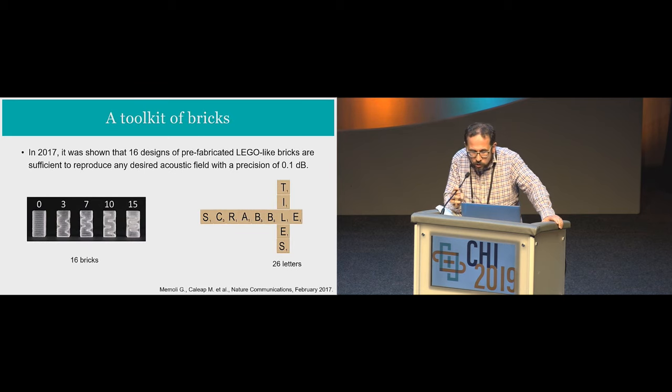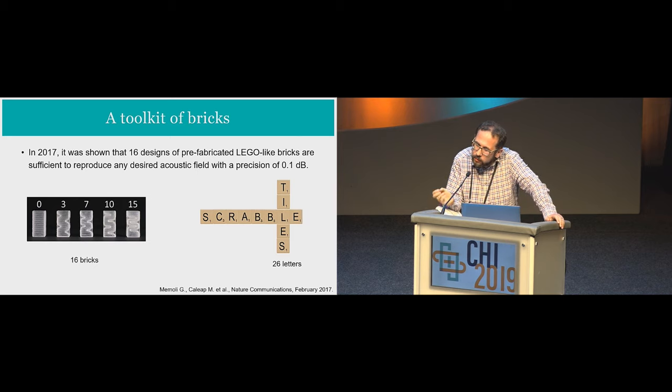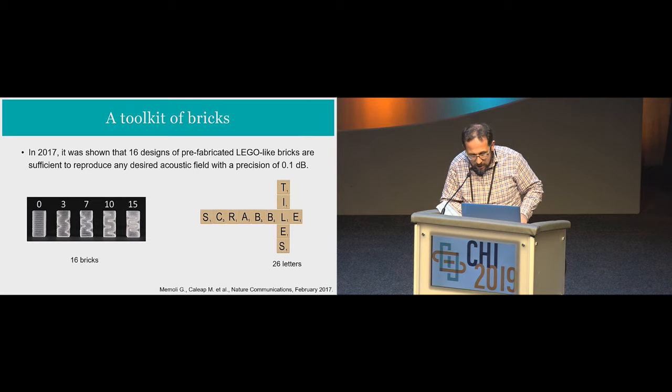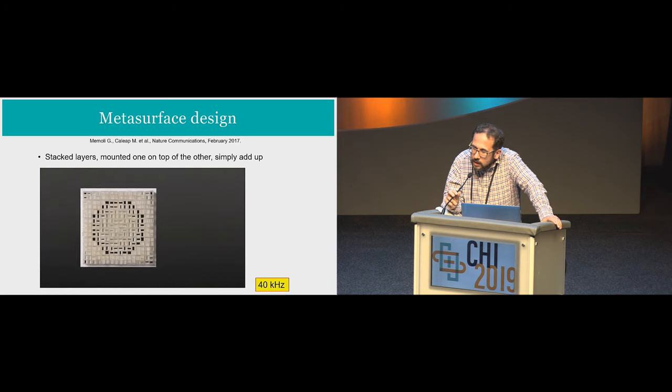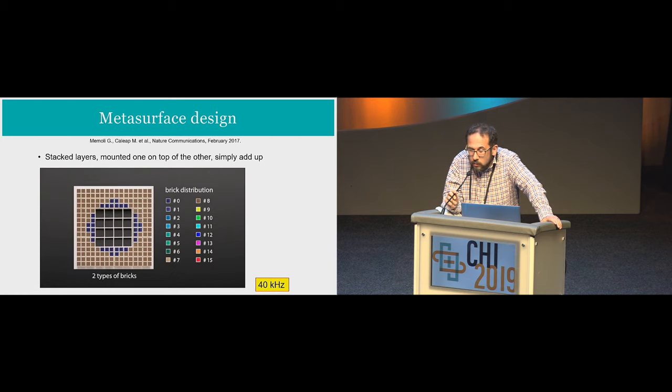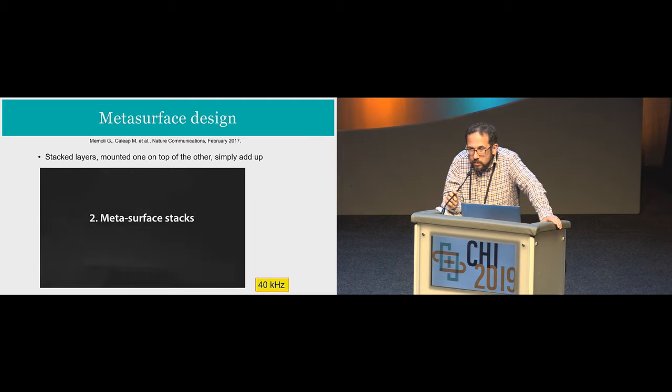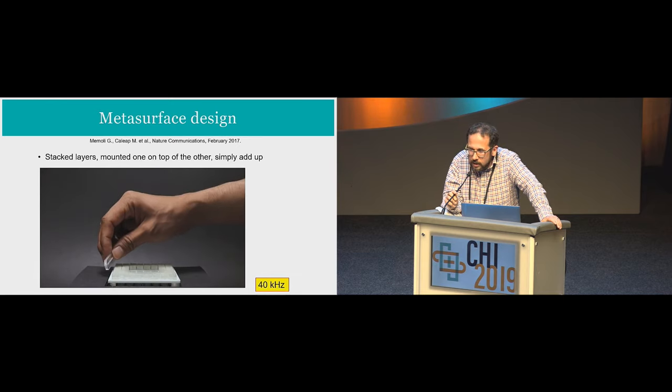The story is very simple. So each of those, a metamaterial is an object which does phase engineering and intensity engineering directly on the sound as it goes through. Now in 2017, it was shown that just 16 designs of prefabricated Lego-like bricks are necessary. That's all you need to design any type of shape or sound that you might want to do. Just like you have 26 letters to do any word, you just need 16 shapes to have control on sound. And so in 2017, you start with those shapes and you assemble them and you see that a pattern is coming out and it's round just like you would imagine a lens would be. And that is what you would call the IKEA recipe for that. And if you take more than one layer, you can get more complex shapes. And what you have here is an example at 40 kHz where you have one layer and another one which is a lens. And on top of that, you get levitation.